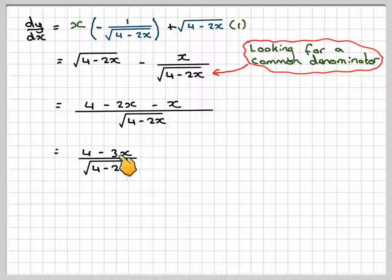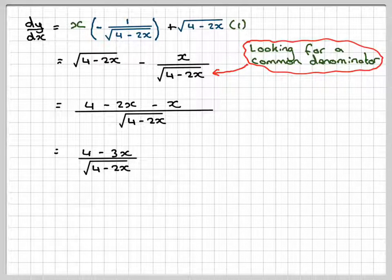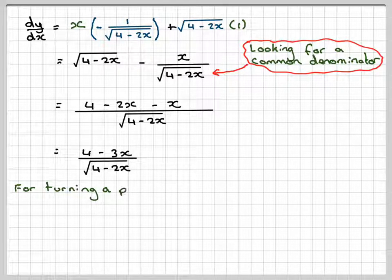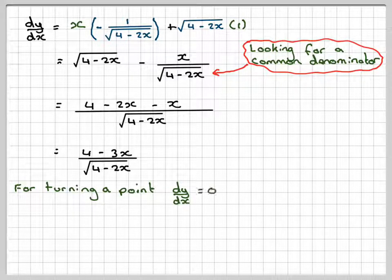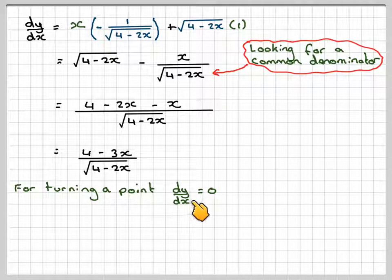So minus 2x minus x gives me minus 3x. Now, for stationary points, or turning points, dy by dx will be equal to 0. So it's actually a turning point, so it won't be a point of inflection.